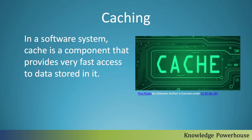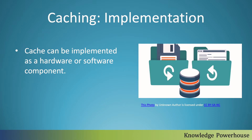In a software system, a cache is a component that provides very fast access to data stored in it. Cache is like a kind of memory — it is different from a normal hard disk. Whenever we use cache, it's a very fast memory with very fast access to get to the data. Cache can be implemented as a hardware component or as a software component — both options are available.